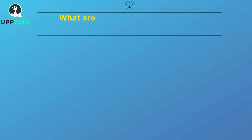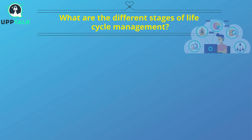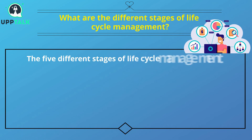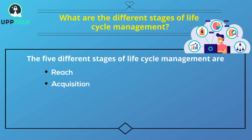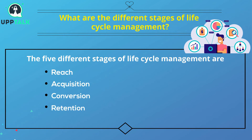What are the different stages of lifecycle management? The five different stages of lifecycle management are: Reach, Acquisition, Conversion, Retention, and Loyalty.